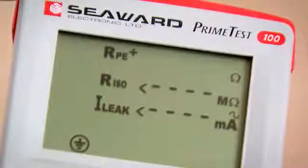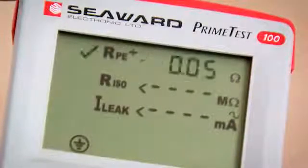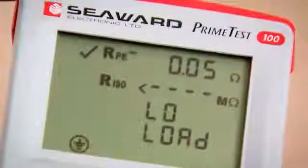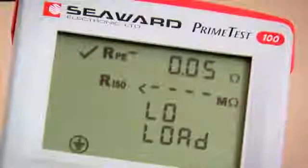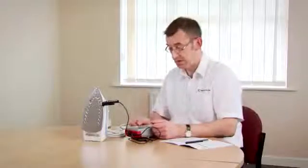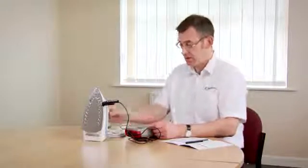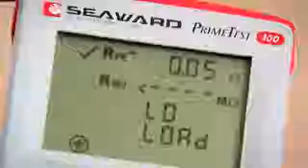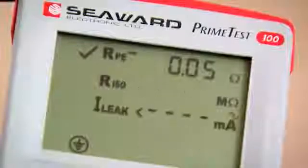Earth Continuity test starts. Now it's important that the appliance is switched on to measure the insulation resistance, and the tester is warning me to check the connections because I haven't switched the appliance on. So when I turn the appliance on, you'll note the test automatically continues.